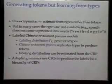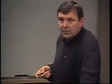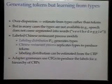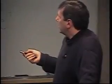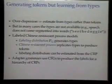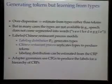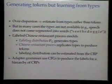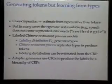For example, speech doesn't come automatically segmented into words. If I want to learn morphology from word tokens, I need to segment it beforehand. So I want to show you a method of doing the segmentation on the fly using these Chinese restaurant process models. The basic idea is we have a labeling distribution P_G which generates the types. Then the Chinese restaurant process is a process which essentially replicates types to produce tokens, and this labeling distribution can be estimated from the Chinese restaurant process.